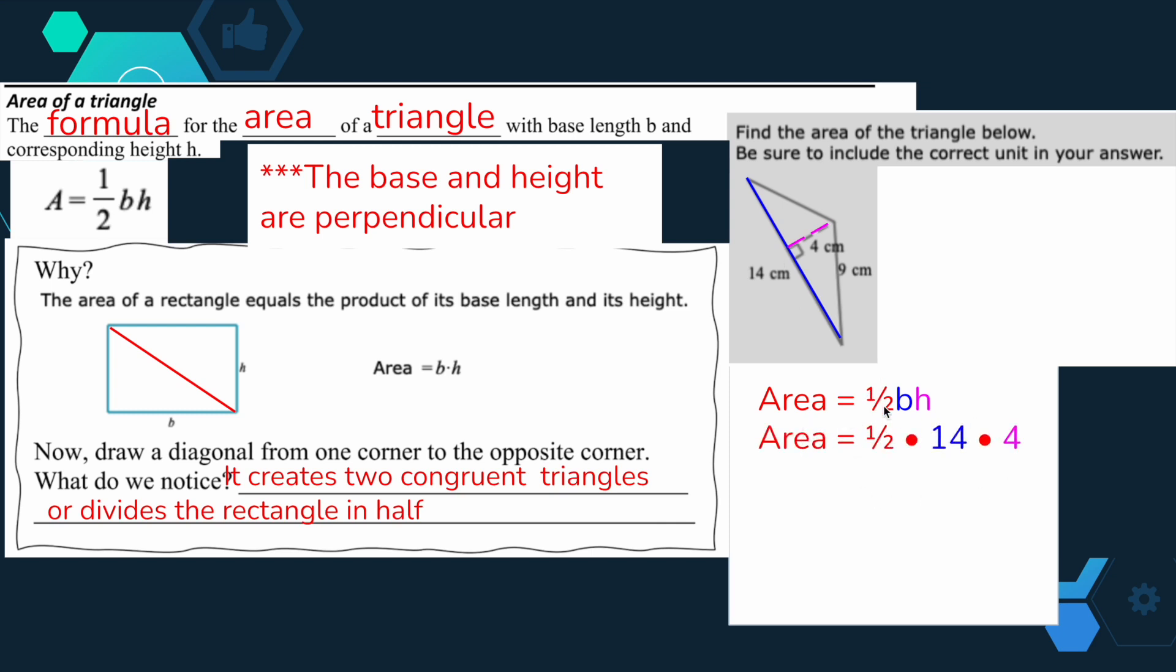We have area equals one half. That'll stay the same, but base is 14, and h is 4. Then 9 is extra information. I'm not going to use that, because that's not a base or height. That's just extra information to see if you know what to do with it. Now we're going to multiply.